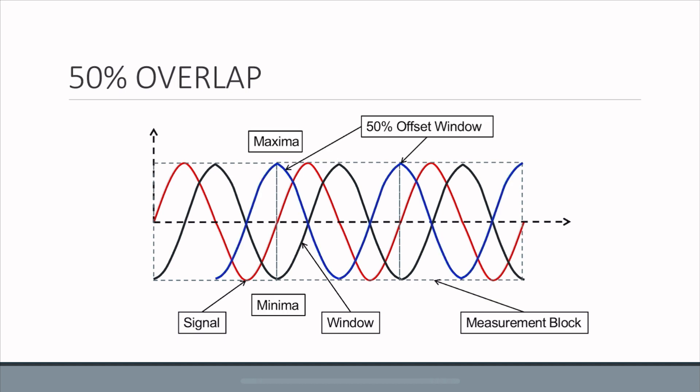In contrast, 50% overlap looks something like this. You have one window, which is a standard black window, but the second window is called the 50% offset window because its maxima or maximum point is coinciding with the minimum point of the black window.